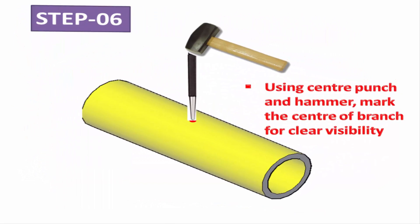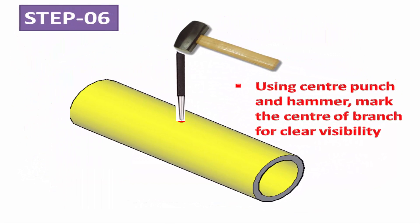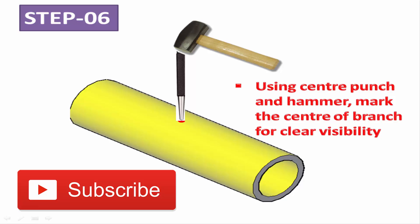Step 6: Using a center punch and hammer, mark the center of the branch for clear visibility. This is one of the easy methods to find the center of the pipe and mark the branch connection center.